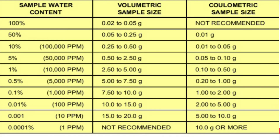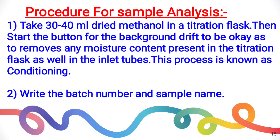How much sample can be used for the analysis of water content? A table is shown on the screen. For example, if your sample contains 100% water, then only 0.02 to 0.05 grams of the sample can be used for analysis. If 5% water is present in the sample, then 0.5 to 2.5 grams of the sample is used for analysis.